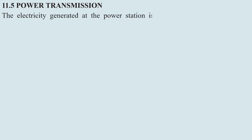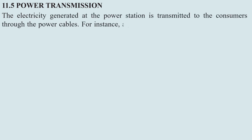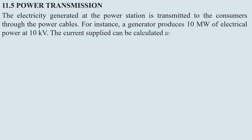The electricity generated at the power station is transmitted to the customers through the power cable. For instance, a generator produces 10 MW of electrical power at 10 kV. The current supply can be calculated as follows.